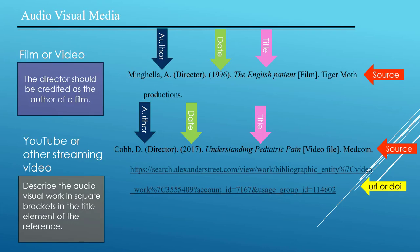What about films or media? In the case of a film, the director should be credited as the author, but designate them as director in parentheses after their name. Also, after the title, put the word film in square brackets followed by a period, and the source information for a film is the studio. For a YouTube or other streaming video, put the word video in square brackets followed by a period after the title.